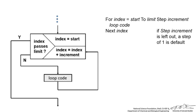In VBA, the code looks like this. We have 'For index', where the index would be i, and a lot of times we start with 1, and then we go to a limit. The step increment is optional — if it's left out, then a step of 1 is the default, because 1 is commonly the increment.